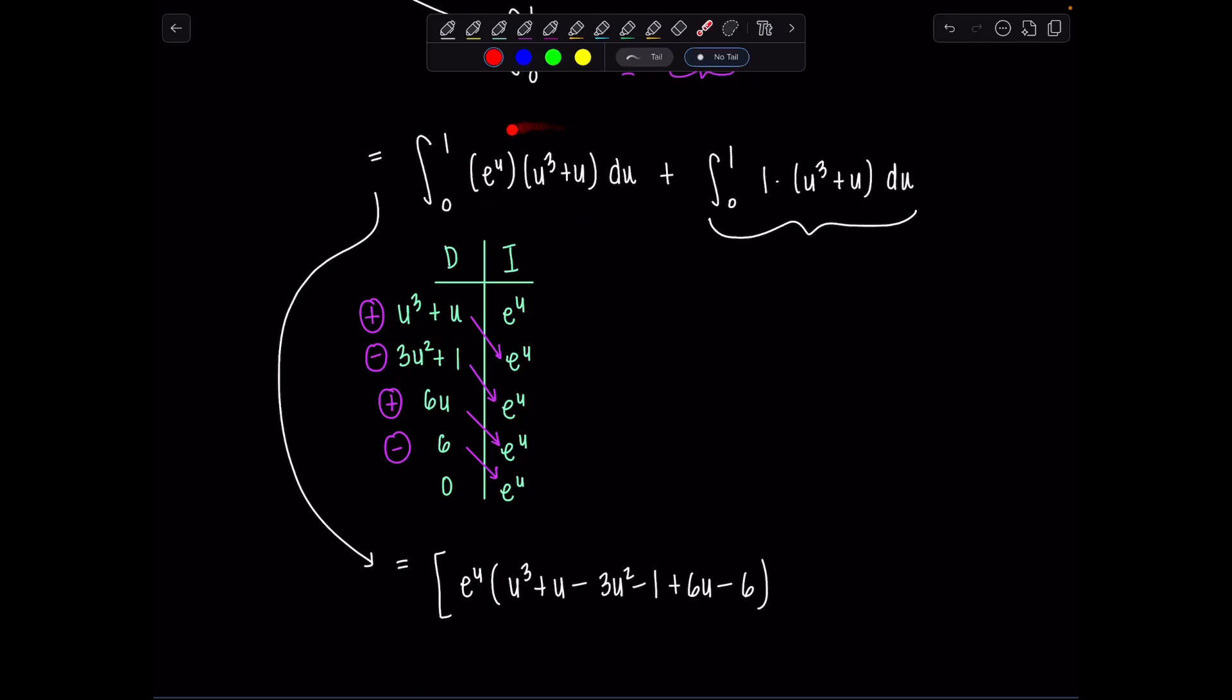So I've integrated this entire first quantity here and then we could just slap the other guy on. Plus this will be one fourth u⁴ plus one half u² and then all of this is evaluated from zero to one.